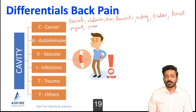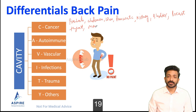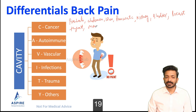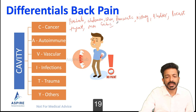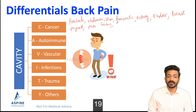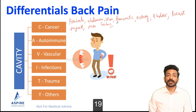For colon cancer, we ask about abdominal problems like tummy pain, alternating bowel habits — diarrhea and constipation — tenesmus, and rectal bleeding. These all point towards colon cancer along with general cancer symptoms. For gastric cancer, we consider melena. For pancreatic cancer, we ask about itching and jaundice.